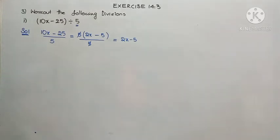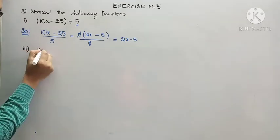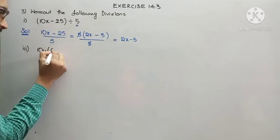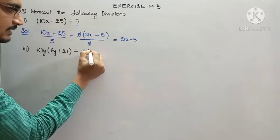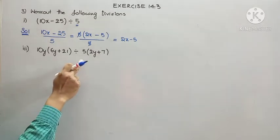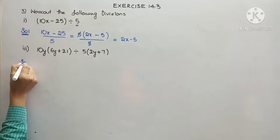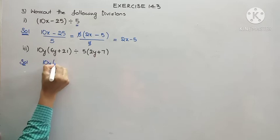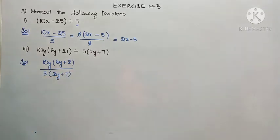Now I am going to do the third question. It is 10y multiplied by (6y + 21), divided by 5 times (2y + 7). We need to check for the possibilities. Remember, our primary focus should be on the divisor. The numerator is 10y times (6y + 21) and the denominator is 5 times (2y + 7), so there is every chance of cancelling the 5.